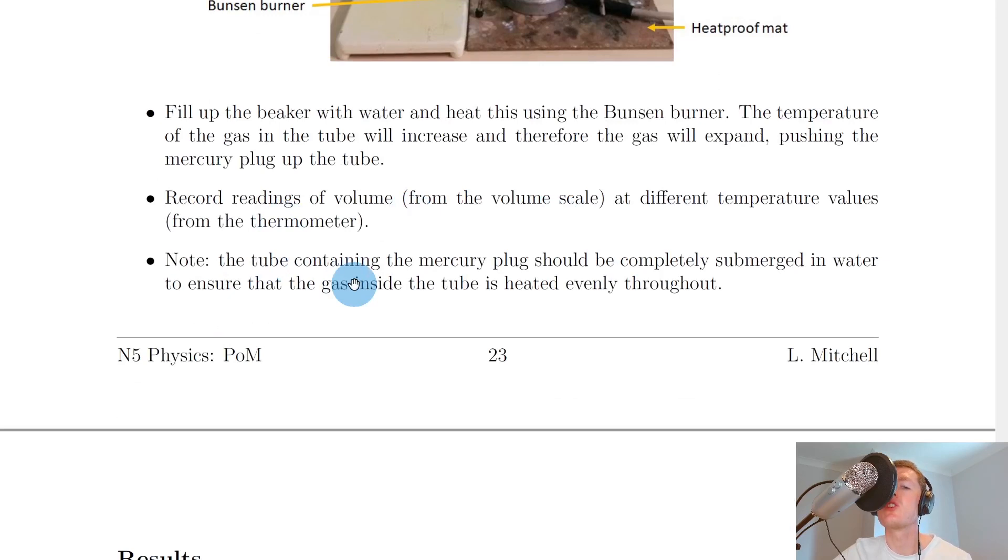The tube containing the mercury plug should be completely submerged in water to ensure that the gas inside the tube is heated evenly throughout. This is very similar to the jolly bulb that we used in the Gay-Lussac law experiment.